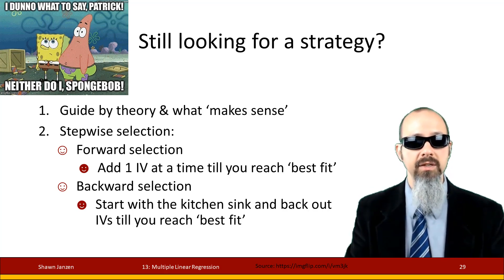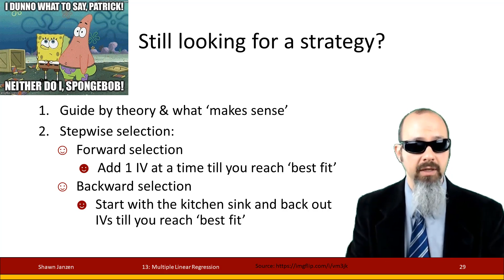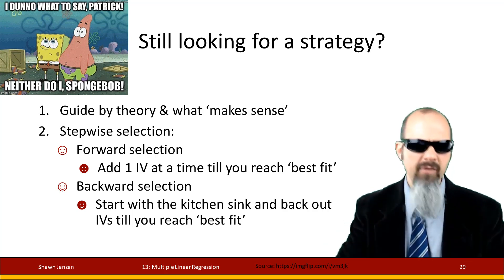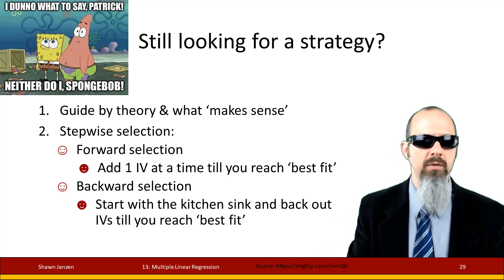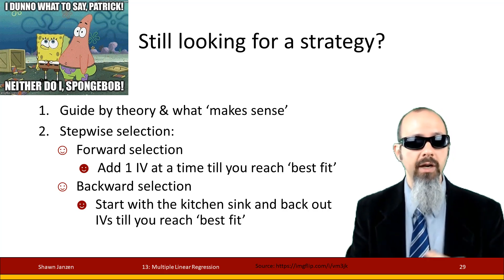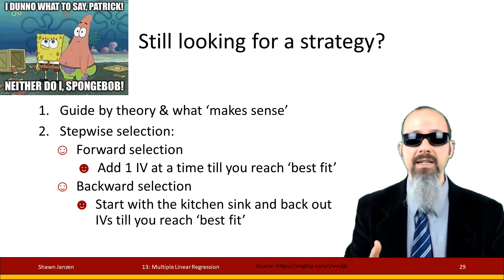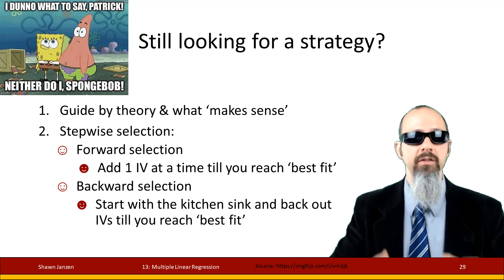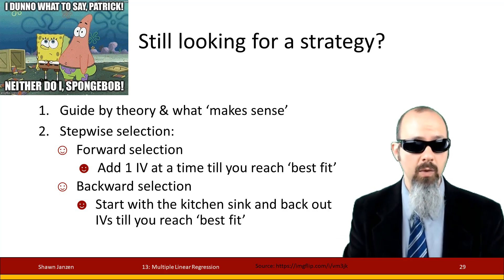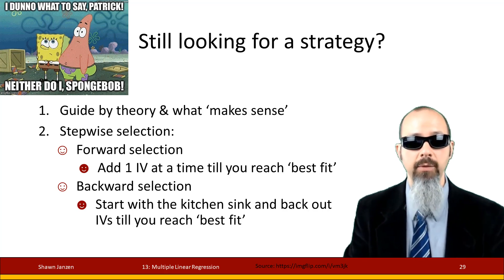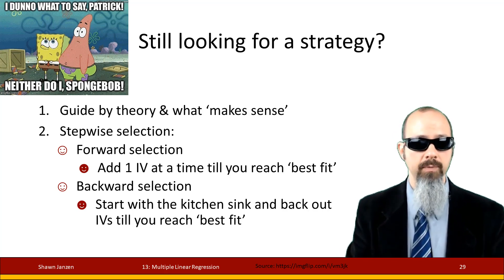The other method is the backward selection, which is a reciprocal approach. You take all the variables you're thinking about, dump everything into the model, and then start working backward — take out a variable, run it, check the fit; take out another variable, run it, check the fit — and so on until you find the best fitting model from this reverse approach.